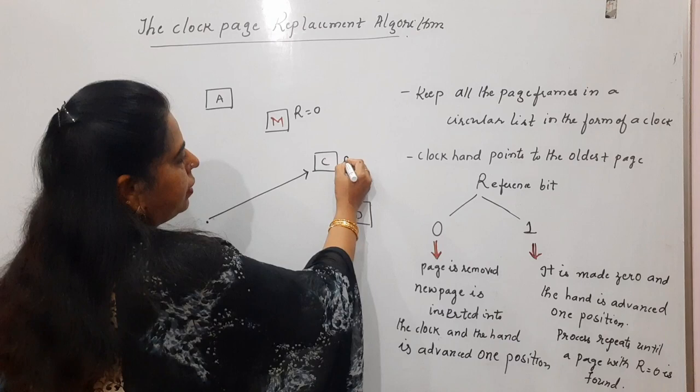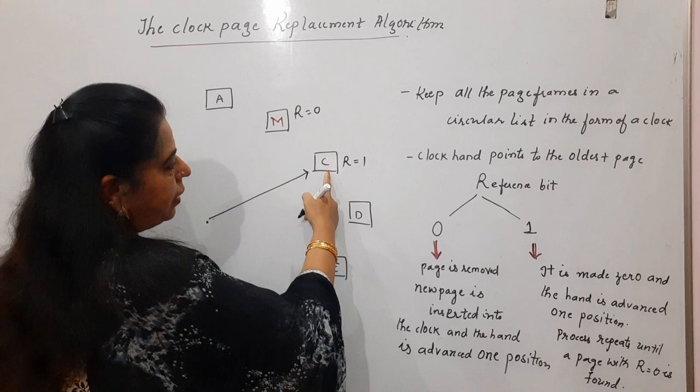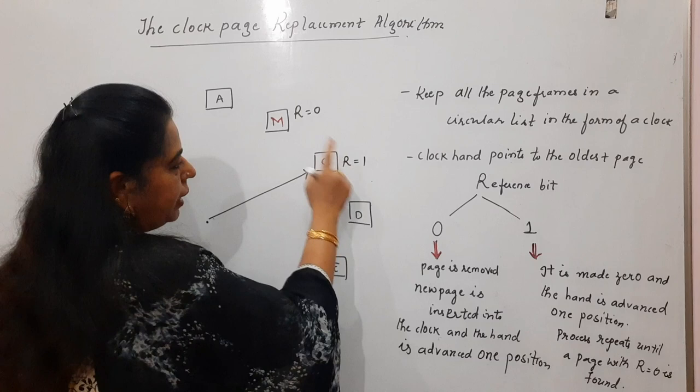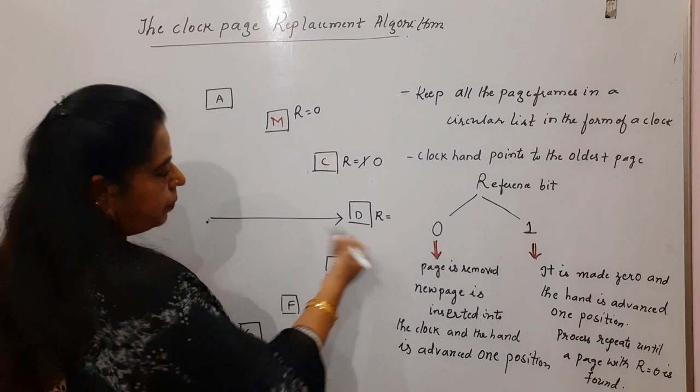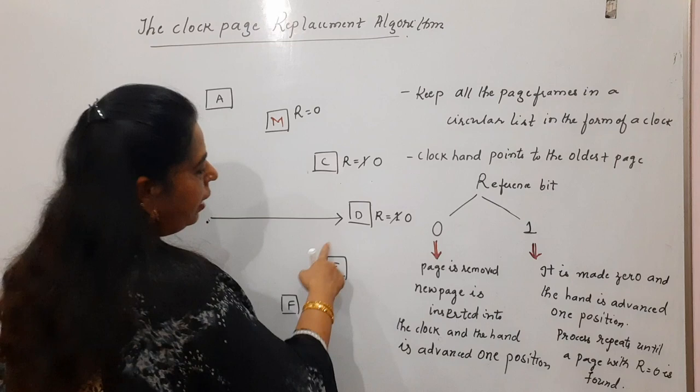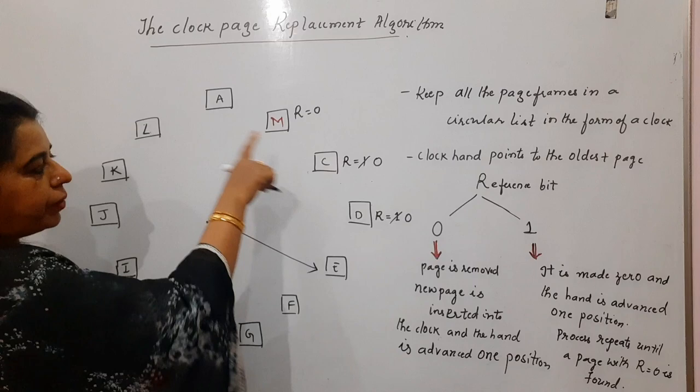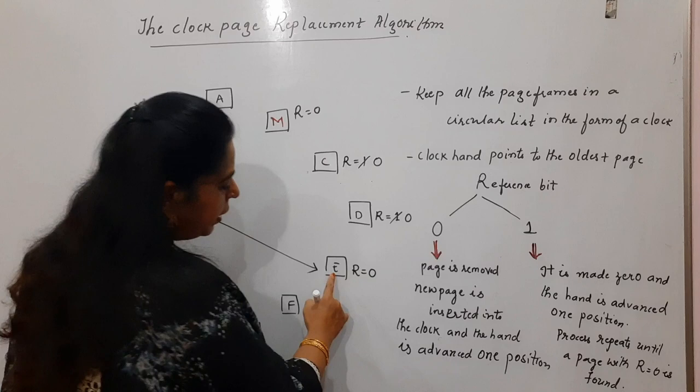For example, the clock hand is pointing to page C, and its R bit is one. The page will not get replaced; instead, the R bit is changed from one to zero and the clock hand advances by one position. This is checked again — if the next page also has R equal to one, its R bit is also set to zero and the hand advances again. This procedure repeats until a page with R equal to zero is found.